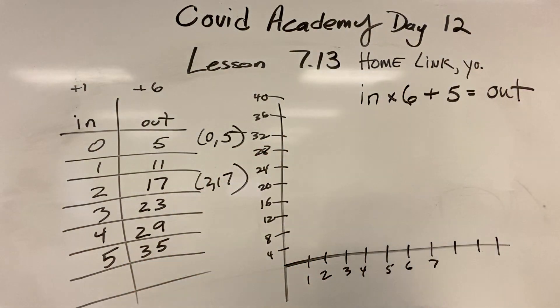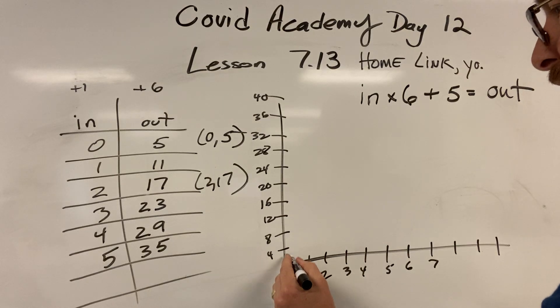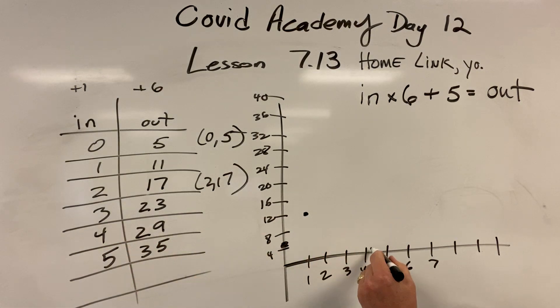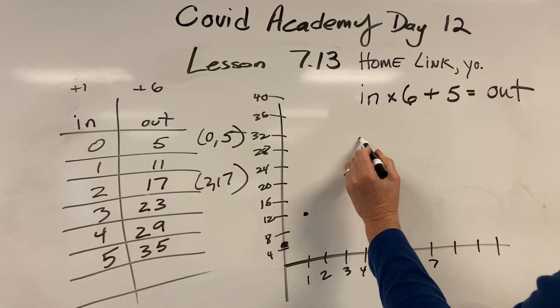Now we graph 0,5—that's about there. 1,11—about there. Let's jump down: 4,29 is about right there.